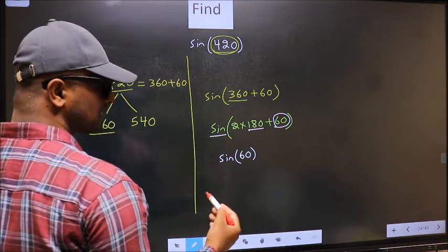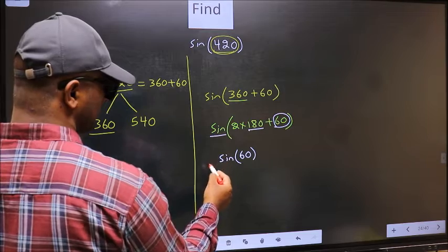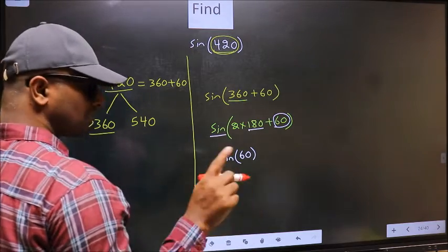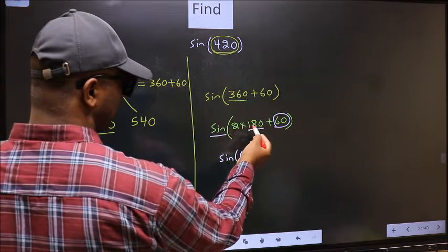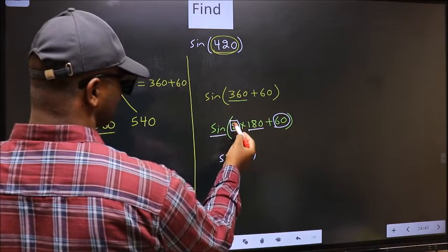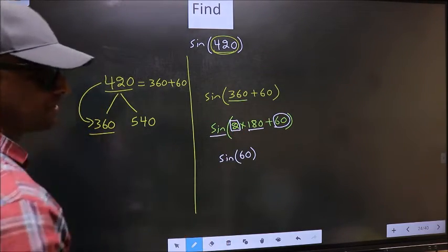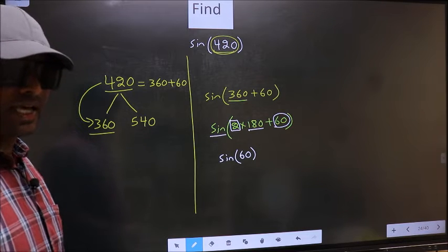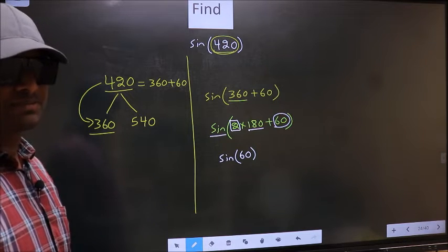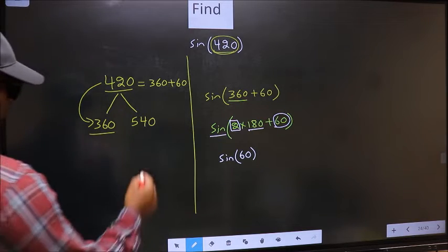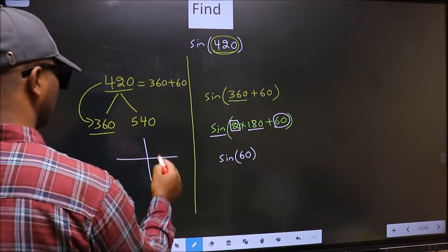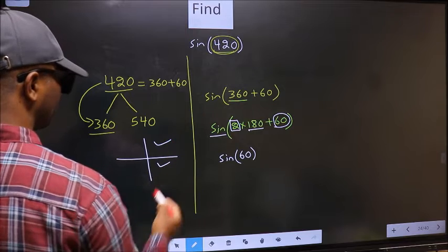Now the question is, will we get plus or minus here? To answer that, we should look at the number before 180. That is 2, and 2 is even. All the even multiples of 180 lie in either the first or the fourth quadrant.